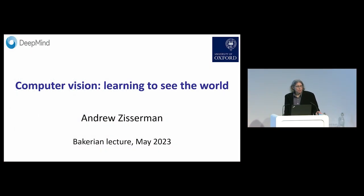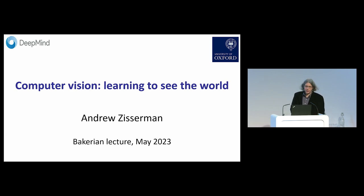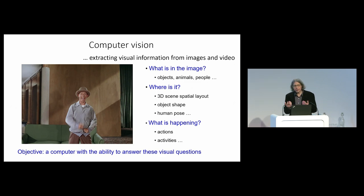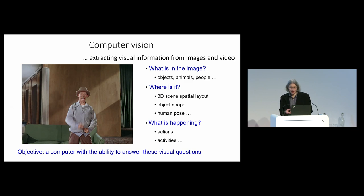Thank you for the introduction, Peter, and thank you for the prize. It's a great honour for me; it's a great honour for the computer vision field as well, so I'm very grateful. I'm going to talk on computer vision: learning to see the world, and I'm going to start off by saying what computer vision is. The aim of computer vision is to extract visual information from images and videos, so that the computer can understand images and videos much like a human would understand them.